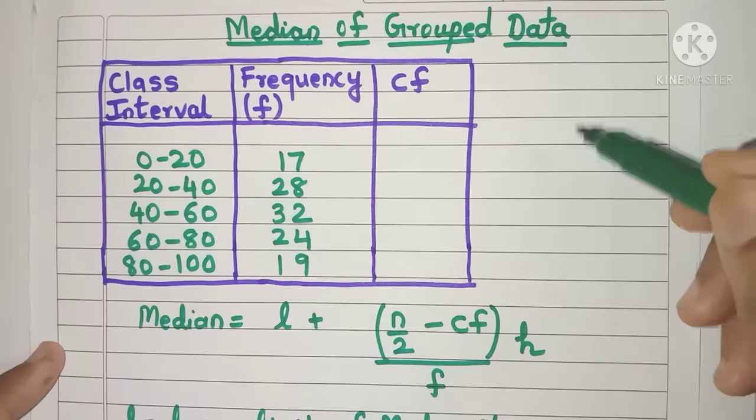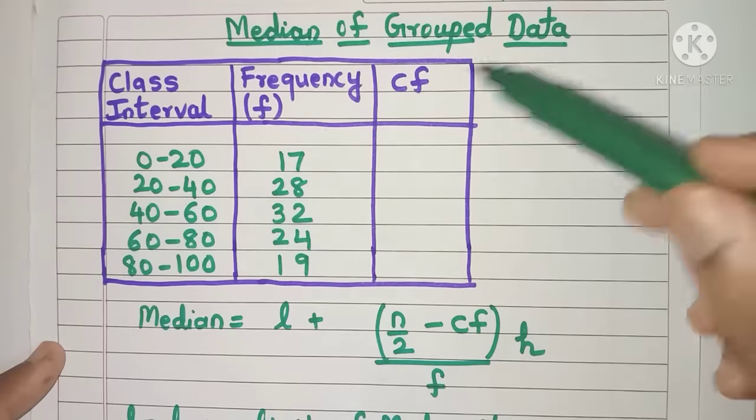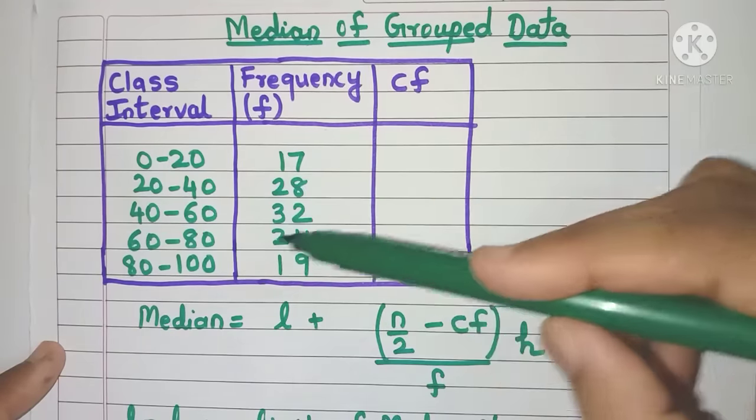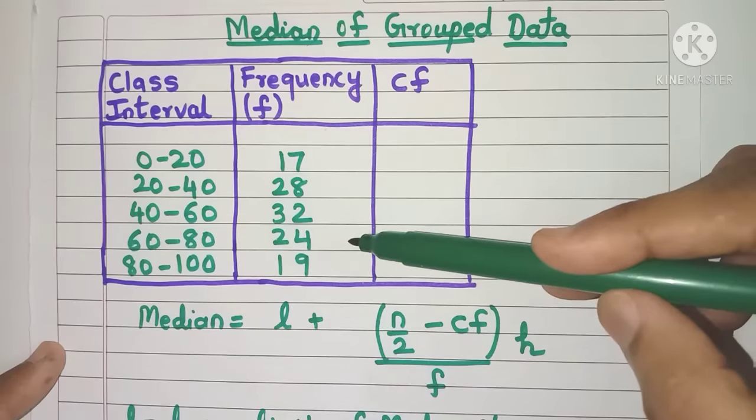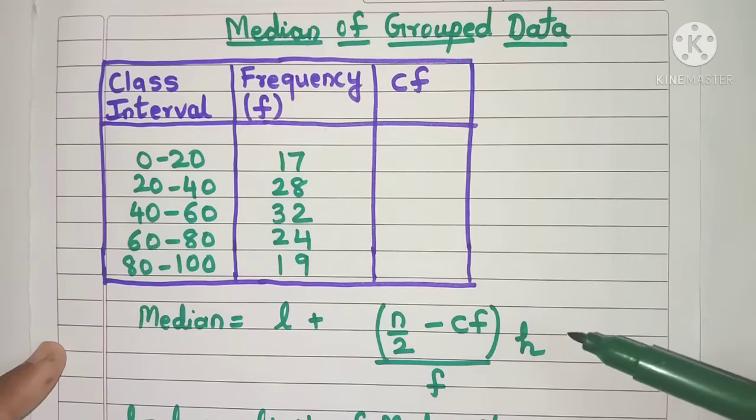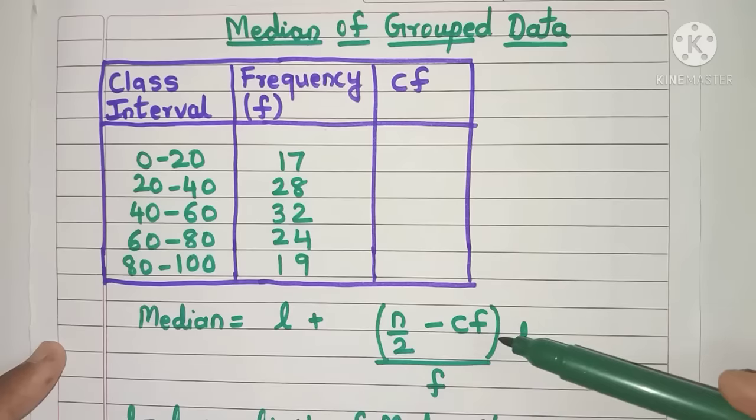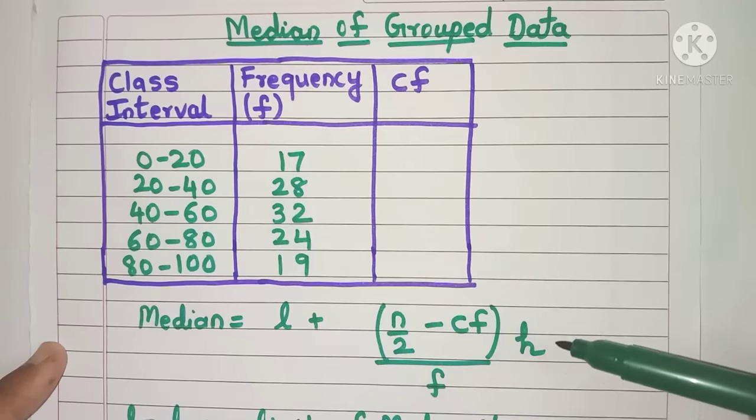Hello everyone, today we will be finding the median of grouped data. This is the class interval column and this is the column with the frequency values. The median formula is given by L plus N by 2 minus CF divided by F into H.